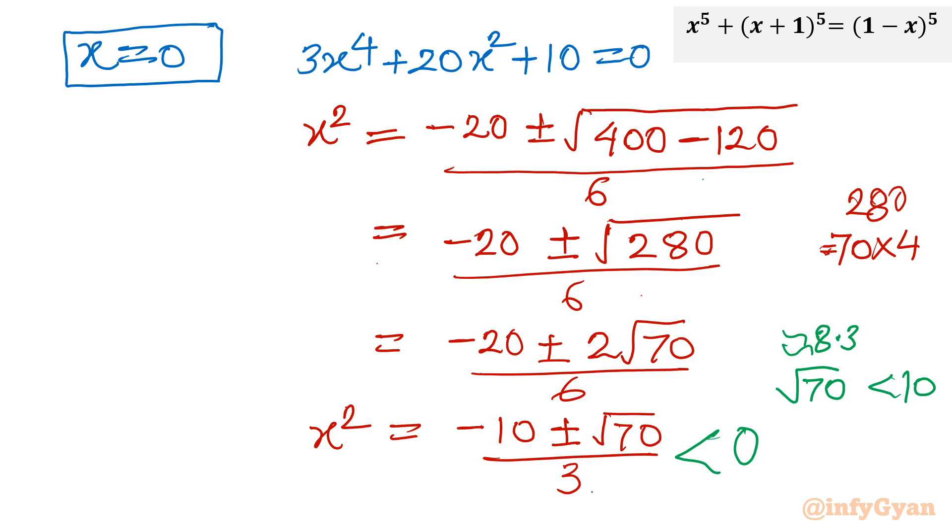That means we have to take minus common because number is negative. So I will take minus outside. I will write here x square is equal to minus outside. In bracket I will write now 10 minus plus, it does not make any change, over 3.